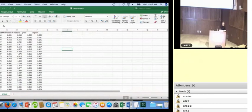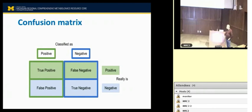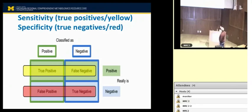The file with the confusion matrices for the SWAN data has been posted — as expected, we have a lot of misclassifications. From this table, you can calculate sensitivity — true positives over true positives plus false negatives — and specificity — true negatives over true negatives plus false positives. These quantities lie between zero and one.